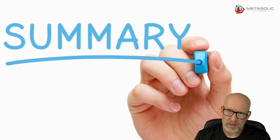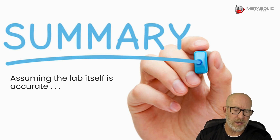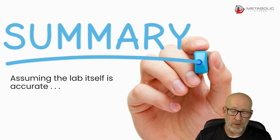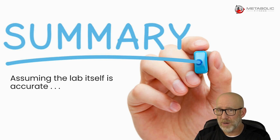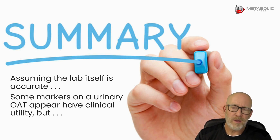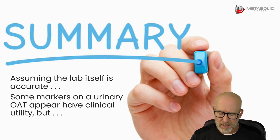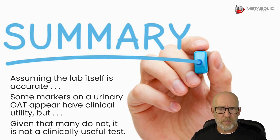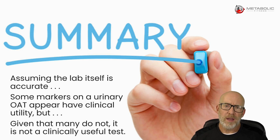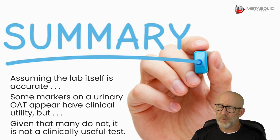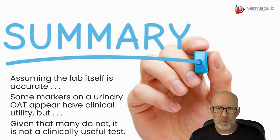Now, that's just a couple of markers we could look at obviously. But generally speaking, assuming the organic acid test laboratory you're using is accurate — and I personally think most of these are pretty accurate if you do split lab testing — only a handful of the markers appear to have any kind of clinical utility. So why are we spending all that money, or a patient's money, on so many markers when many of them are highly questionable at best, and only a handful actually have some clinical utility? In most cases, practitioners don't know which ones are good and which ones are not.